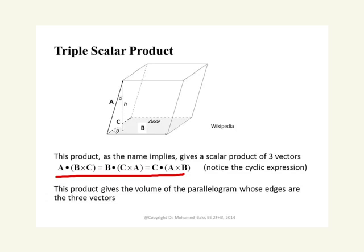Because one meaning of the vector product is the area of the parallelepiped surrounded by two vectors, when you take the dot product with the third vector, this gives you actually a volume — the volume of the parallelepiped whose edges are the three vectors. So first you do a cross product, and after that you do a dot product.